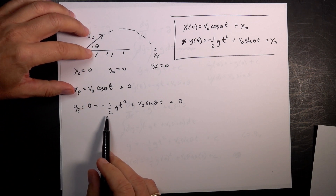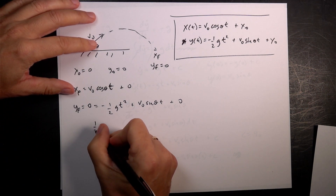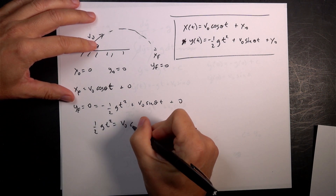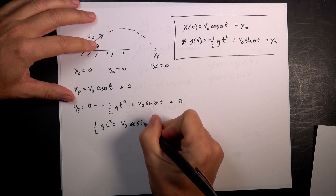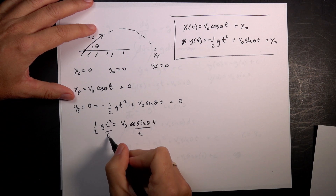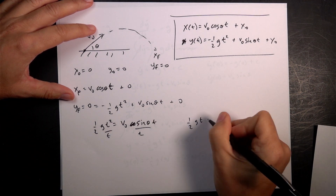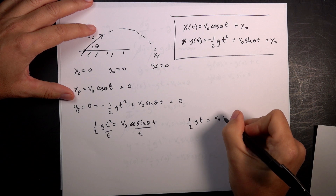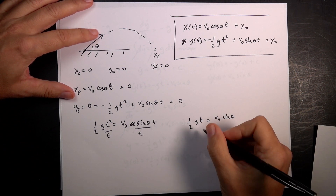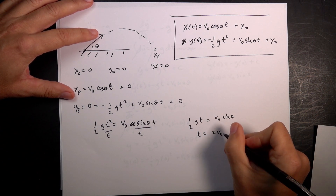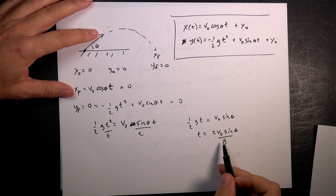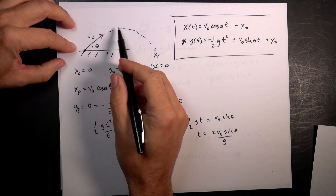Let's add one half g t squared to both sides: I get one half g t squared equals v zero sine theta times t. Now I divide both sides by t and get one half g t equals v zero sine theta. Dividing both sides by g and multiplying by 2 gives t equals 2 v zero sine theta over g. That's how long it takes to go up and then back down.